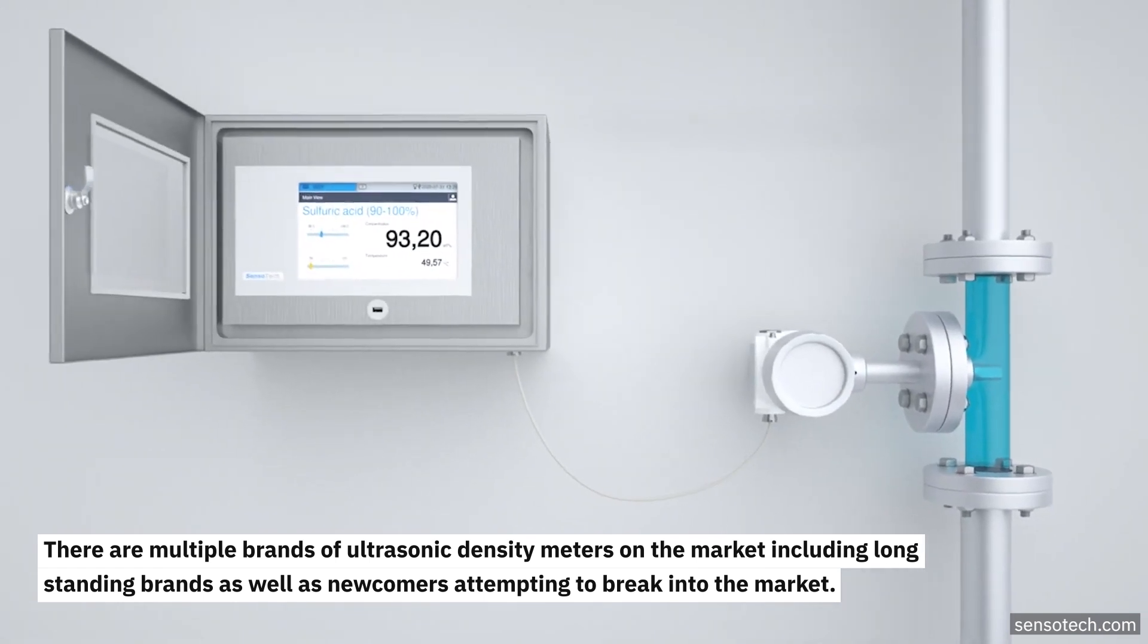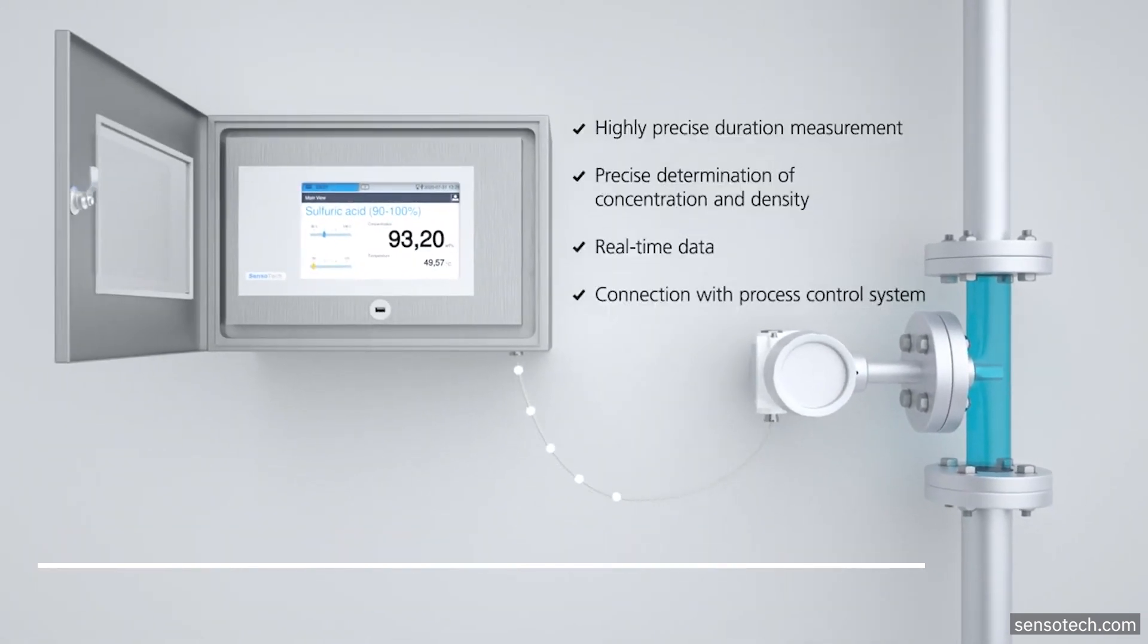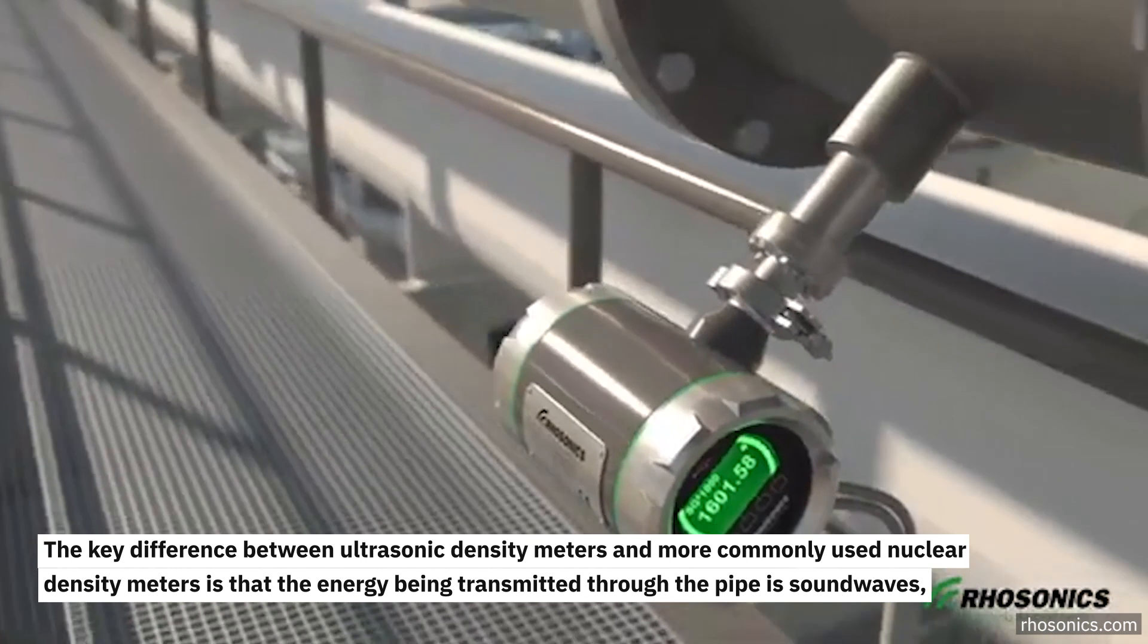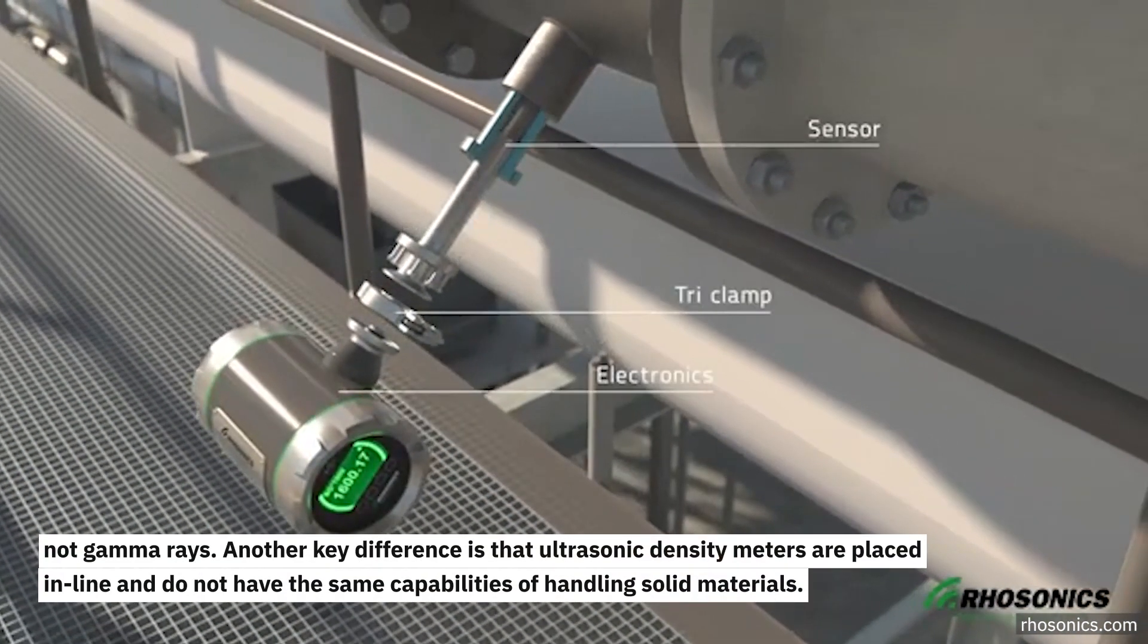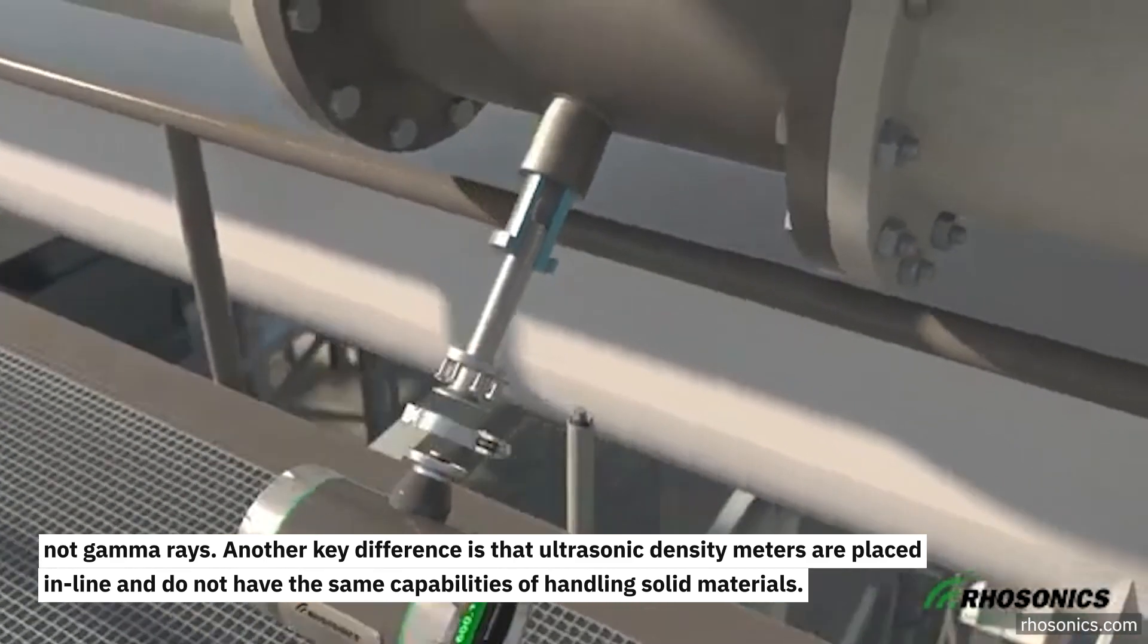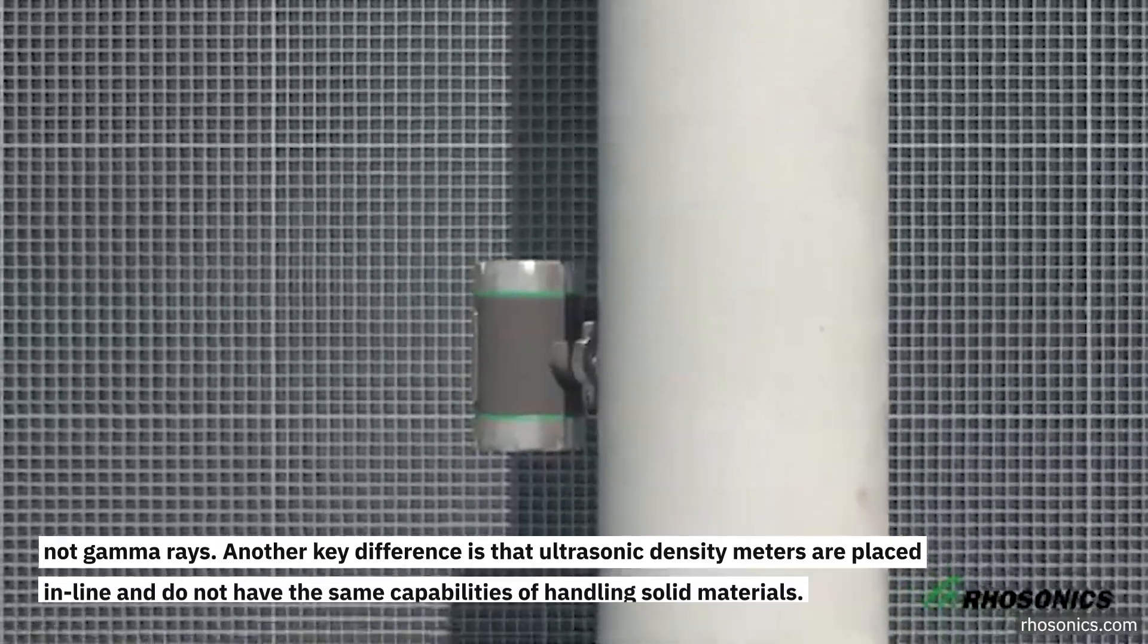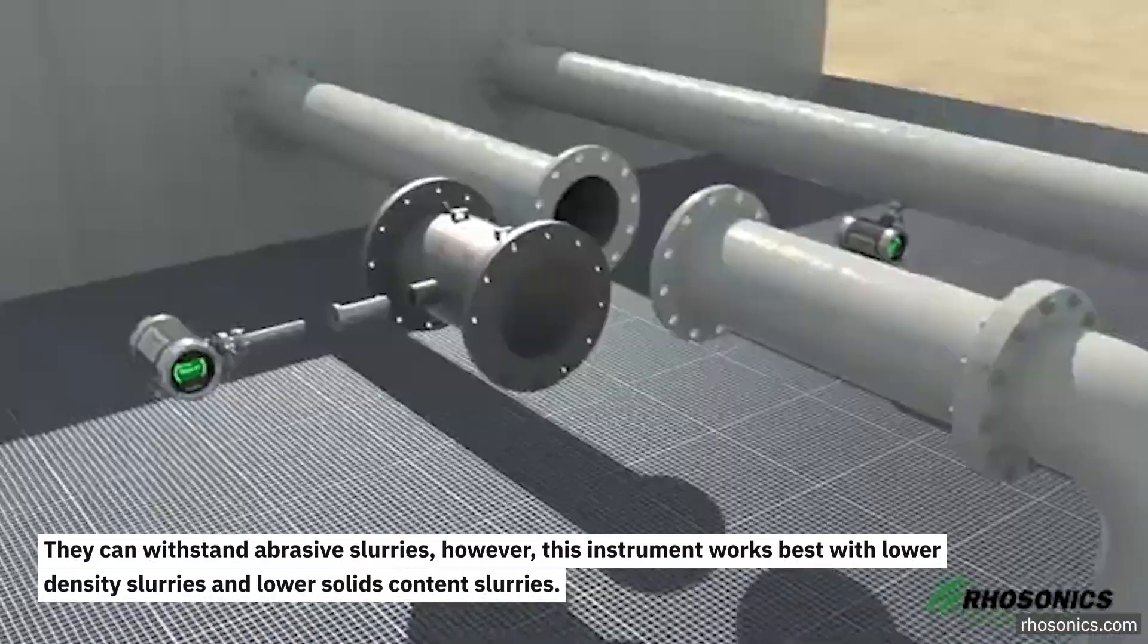The key difference between ultrasonic density meters and more commonly used nuclear density meters is that the energy being transmitted through the pipe is sound waves, not gamma rays. Another key difference is that ultrasonic density meters are placed inline and do not have the same capabilities of handling solid materials. They can withstand abrasive slurries; however, this instrument works best with lower density slurries and lower solid content slurries.